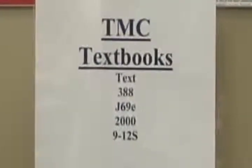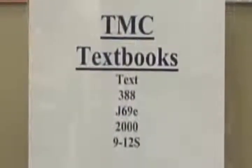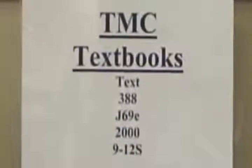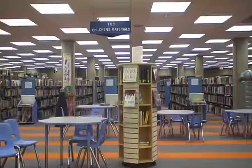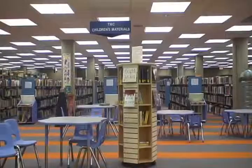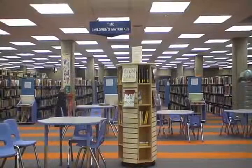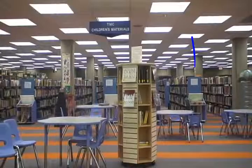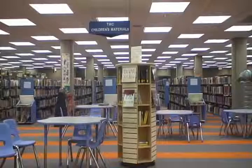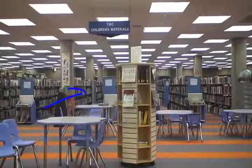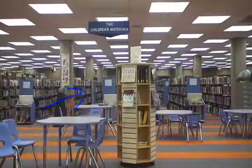To learn more about alphabetical shelving, please see the last video in this series. The nonfiction section is located on the right side of the TMC area. Textbooks can be found on the back shelves.